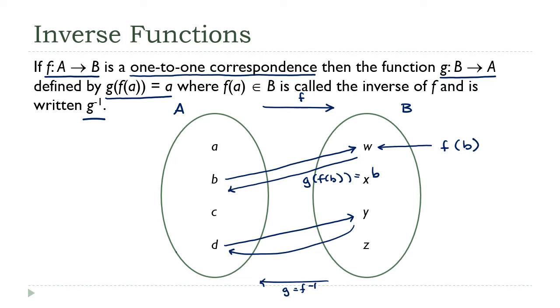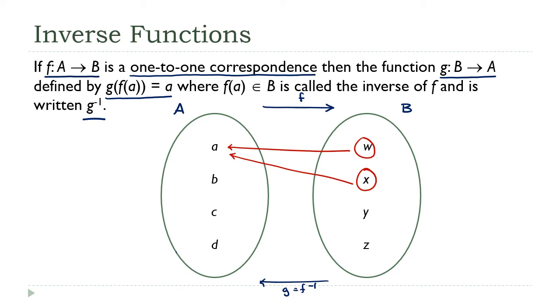If we pick two values from the domain of g, say w and x, they have to be mapped to different values of A, because if they didn't, if they both went to the same value, then the original function f would not have been one-to-one, which we're assuming it is.